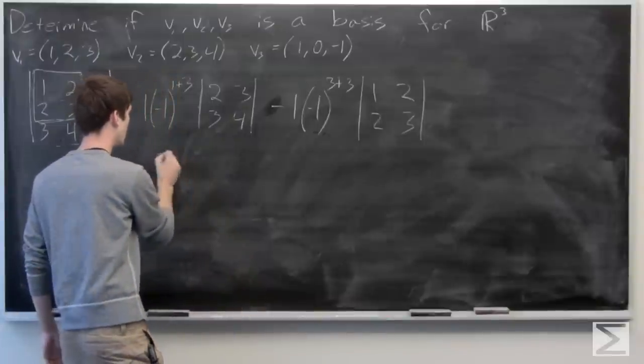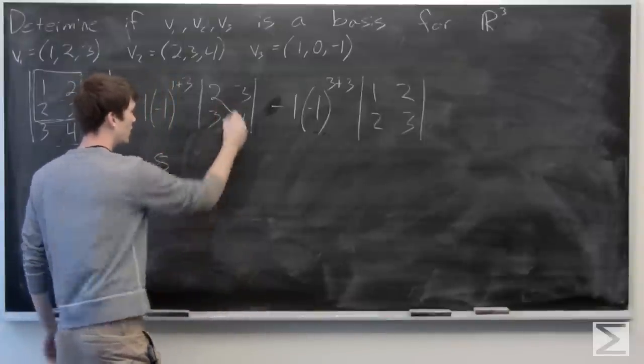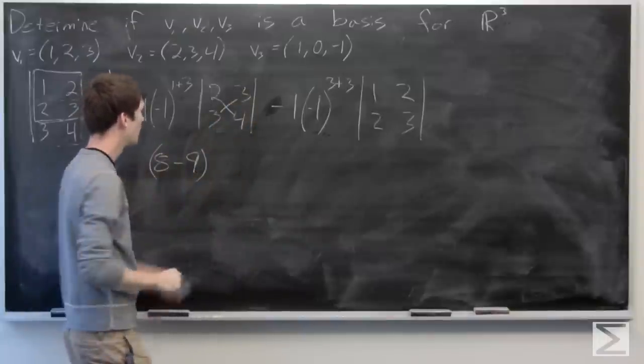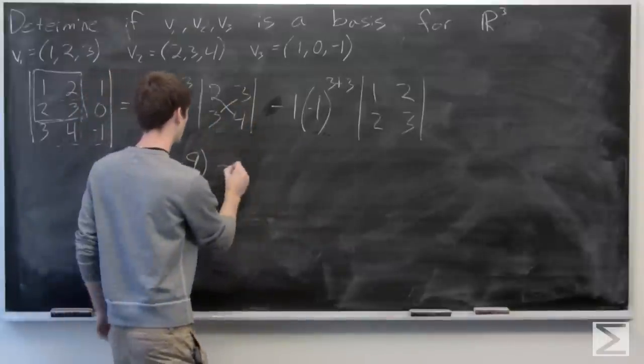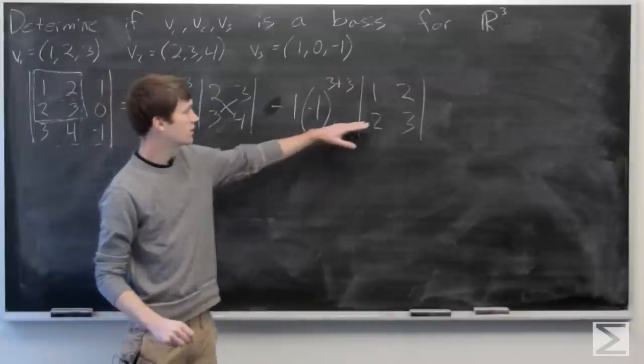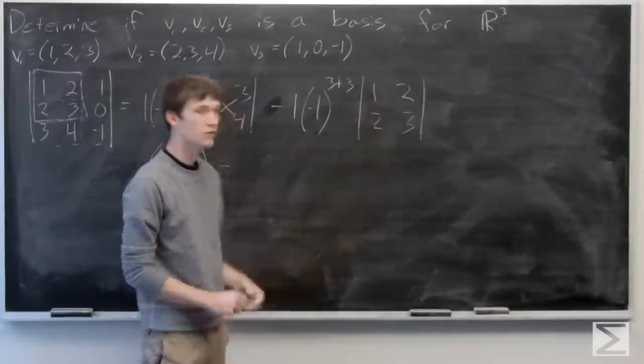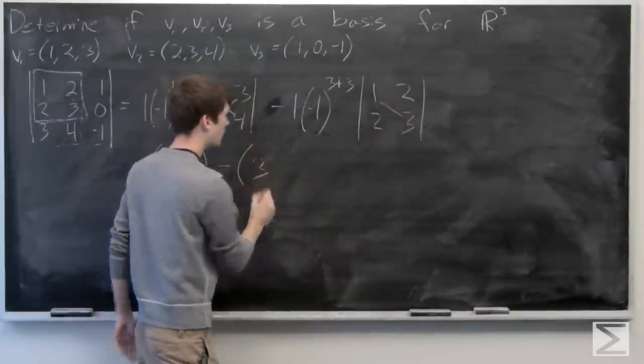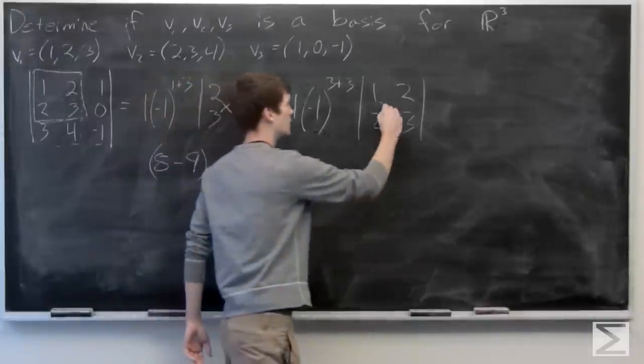which is 8 minus 9 minus the determinant of 1, 2, 2, 3, which is 3 minus 4.